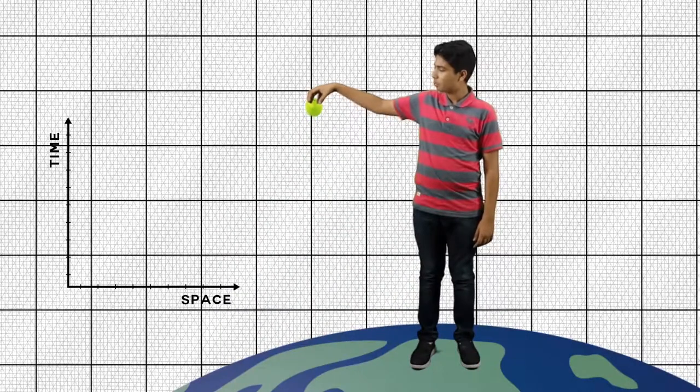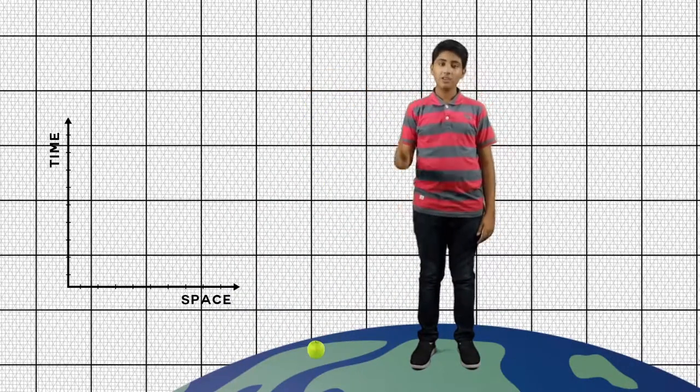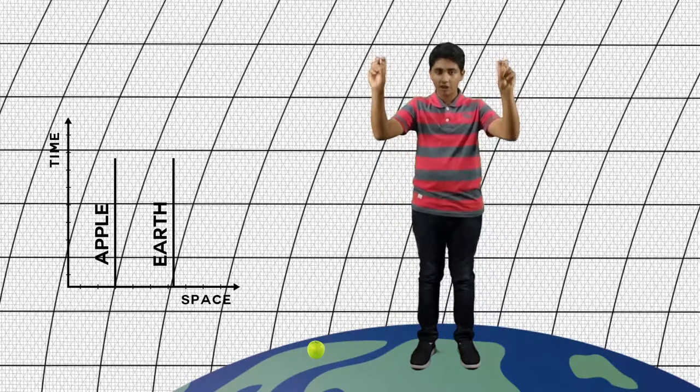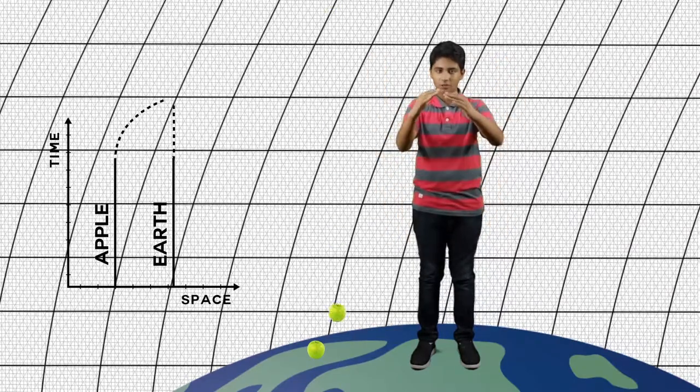So, why does an apple fall on earth? It has a straight trajectory through space time but since space time is curved, the straight line trajectory of the apple meets that of earth.